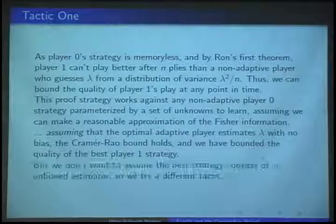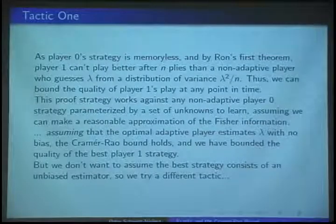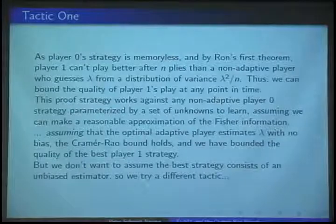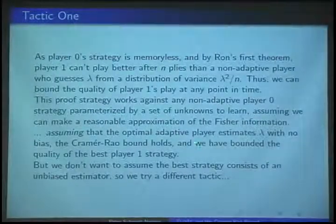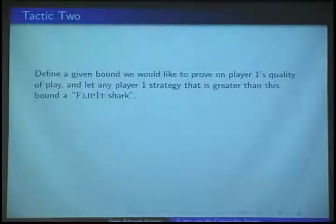So the result is that if you are playing against a player who's playing a Poisson process, after a certain number of moves you can't be doing better than a certain bound — assuming that the optimal strategy is unbiased, because the Cramér-Rao bound only holds when you make unbiased estimators.